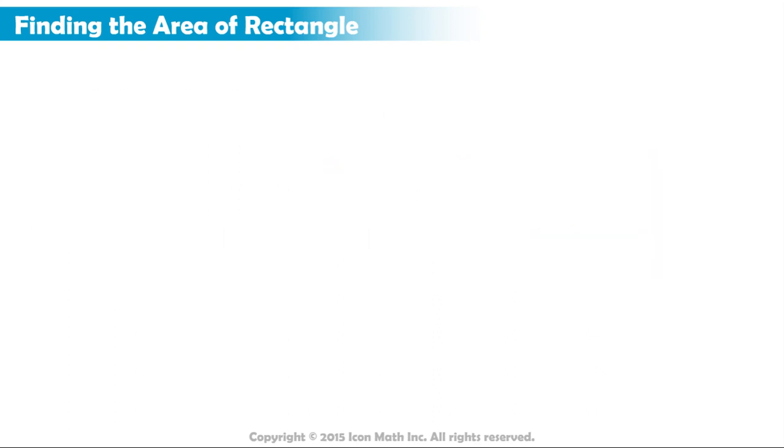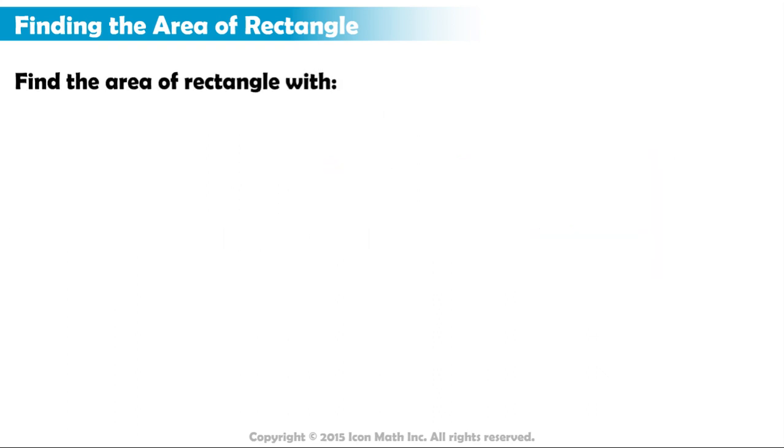What if we wanted to find the area of a rectangle with length 2 thirds inches and width 3 fifths inches? Because we have fractions of a whole representing the length and width of a rectangle, we can't work with full unit squares, but parts of a unit square.